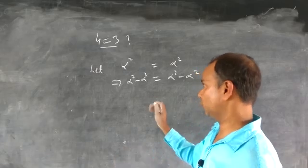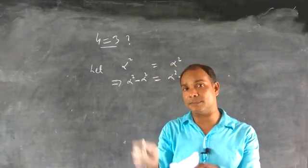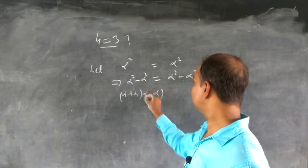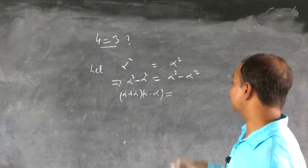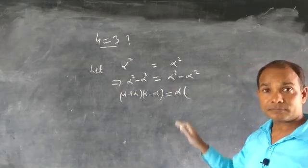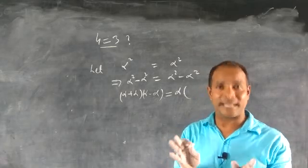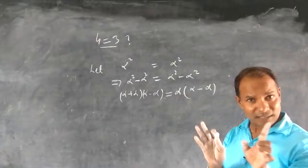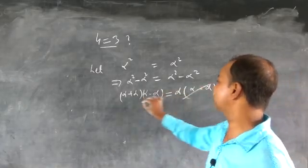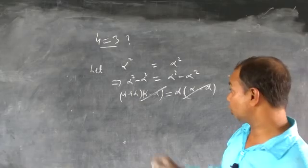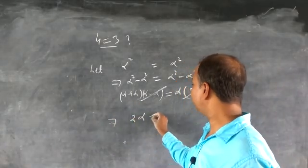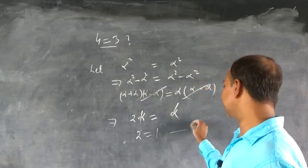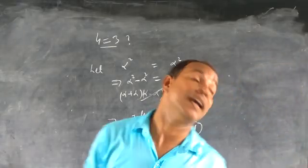Now, a squared minus b squared equals a plus b times a minus b — that's the formula. So can we write alpha plus alpha times alpha minus alpha on the left side? Yes, we can write it. Now can I take alpha common from here? Alpha squared equals alpha times alpha. So alpha minus alpha, the same factor, gets out. Alpha plus alpha becomes two alpha, and this becomes alpha. So two equals one — take it as equation one.